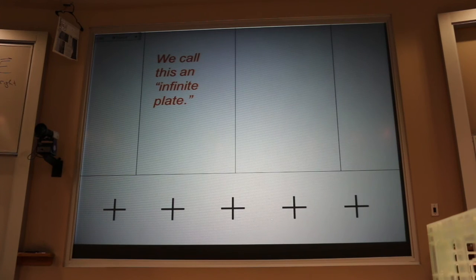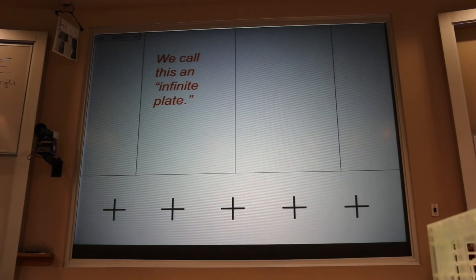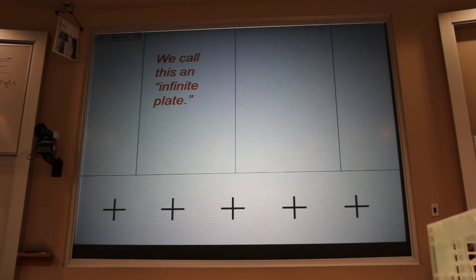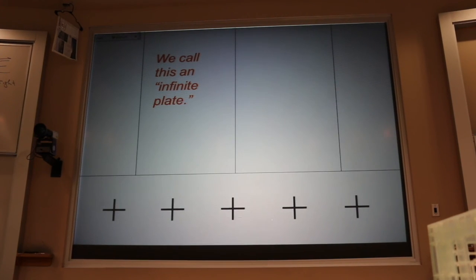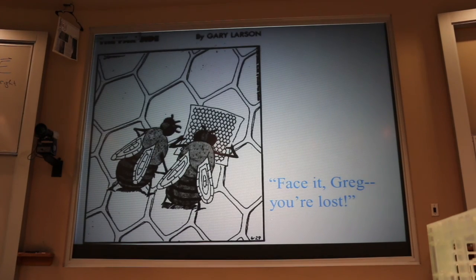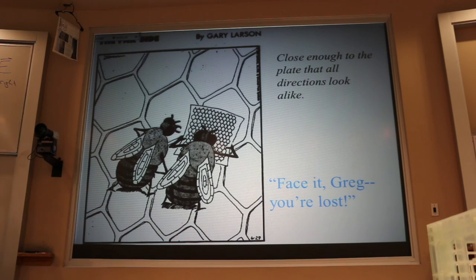The infinite sheet or infinite plate approximation. Well, how do I know when I'm that close? Well, again, I love the Far Side. Face it, Greg, you're lost. If you are close enough to the surface, imagine yourself an amoeba right down here, and you look out and you see the charge is just going on forever like the Sahara. And you look over here, whoa, and you look over here, whoa. Every direction you look, it looks the same. That's close enough.